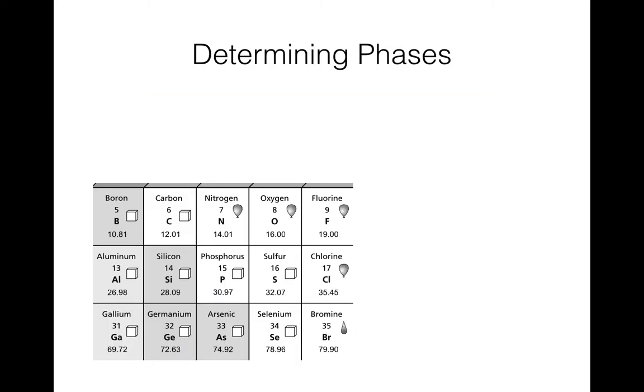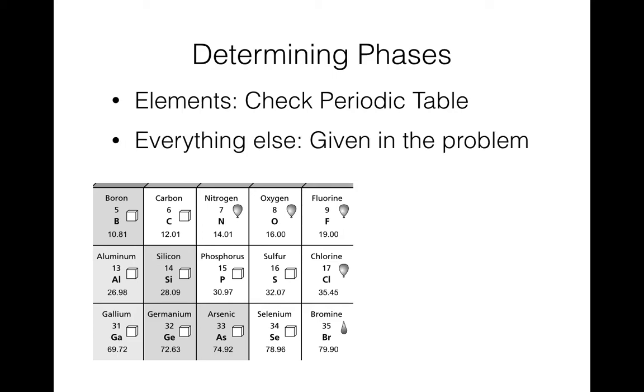Now let's figure out how you're going to know what the phase is when you're writing your balanced chemical equation. If it's an element, just check the periodic table. If it's some other compound, at this point it's just going to be given to you in the problem. It will tell you this is solid, this is liquid, this is gas, this is aqueous, and then you just have to interpret that and write it down.